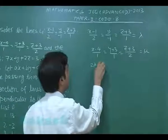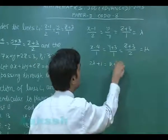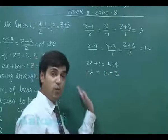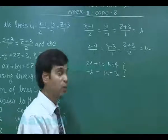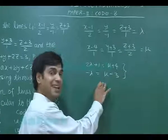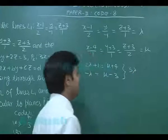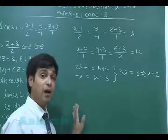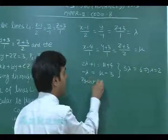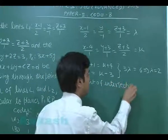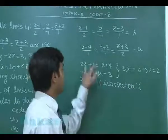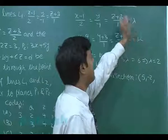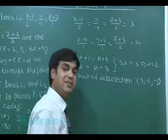To find the intersection of L1 and L2, set L1 = λ and L2 = μ. Comparing x-coordinates: 2λ + 1 = μ + 4, and y-coordinates: −λ = μ − 3. Subtracting eliminates μ, giving 3λ = 6, so λ = 2. Substituting λ = 2: x = 5, y = −2, z = λ − 3 = −1. The point of intersection is (5, −2, −1).